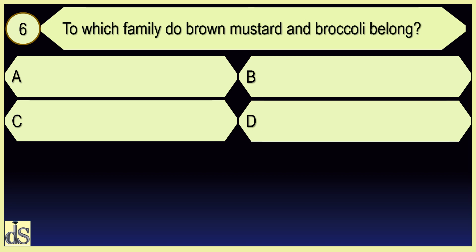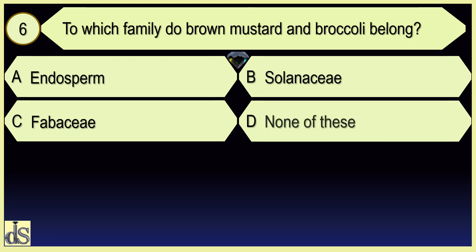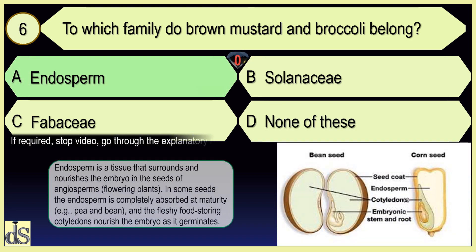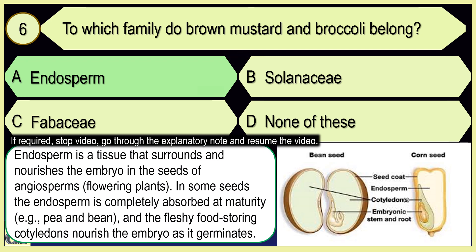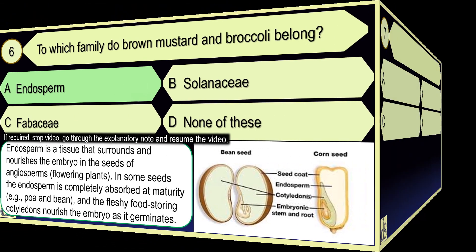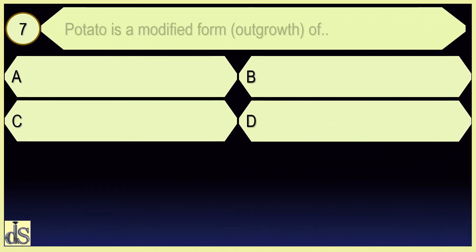To which family do brown mustard and broccoli belong? Endosperm. Potato is a modified form of stem.